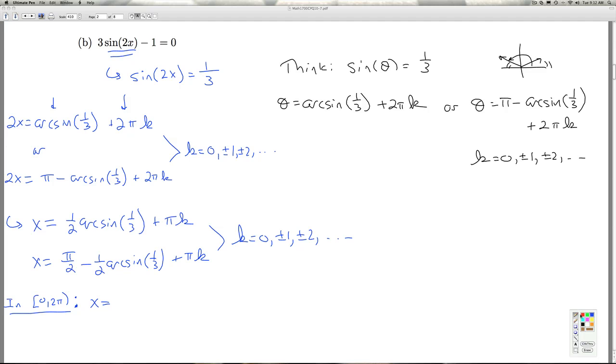So to help us out, let's remember that the arc sine of 1 third is an acute angle. It's between 0 and pi over 2, and that's by definition. So what I'm looking at here is 1 half of that. So if I multiply through by 1 half, 1 half times 0 is 0. So this guy lives between 0 and pi over 4, and so that's going to help us out here.